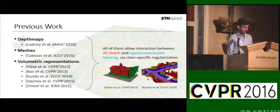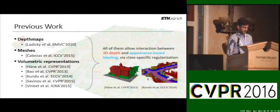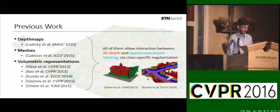Then there is Kundu et al. from 2013, which also jointly infers the occupancy state of voxels and semantic categories. In contrast to Henne, the underlying data structure here is a sparse octree, whose structure is fixed from the beginning, and the complexity scales here with the number of observed pixels.